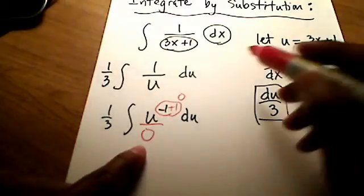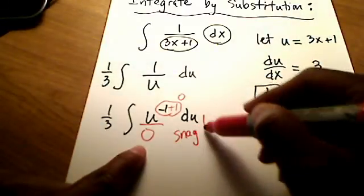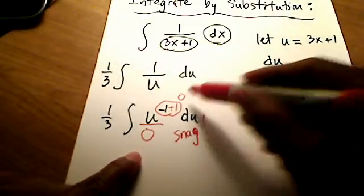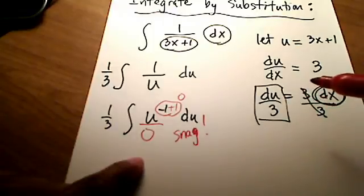So here's our snag. We can't add 1, giving exponent 0, and divide by that new exponent. It just doesn't work.